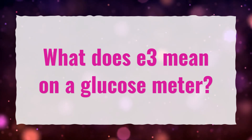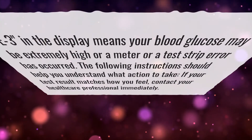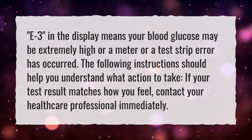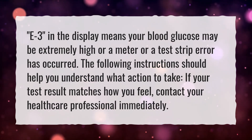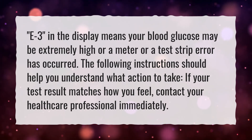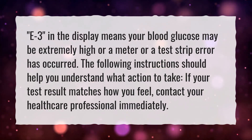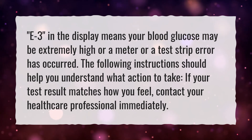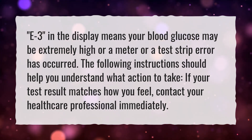What does E3 mean on a glucose meter? E3 in the display means your blood glucose may be extremely high, or a meter or test strip error has occurred. The following instructions should help you understand what action to take. If your test result matches how you feel, contact your healthcare professional immediately.